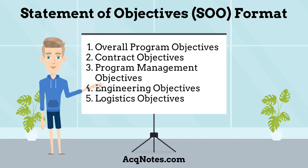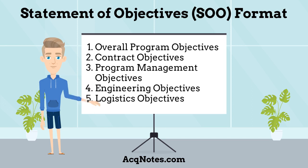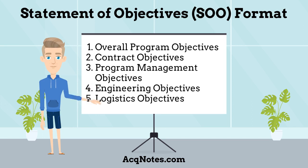This is tailored to meet the specific program needs. Section 4 — Engineering Objectives: list the engineering objectives to include software and systems engineering. And finally, Section 5 — Logistics Objectives: list overall supply chain objectives.